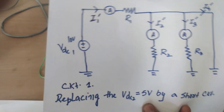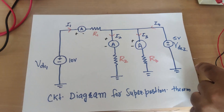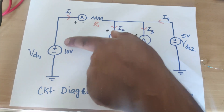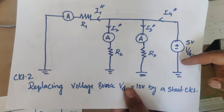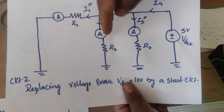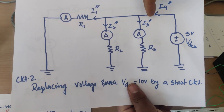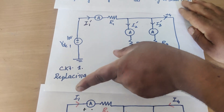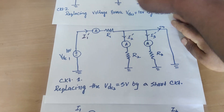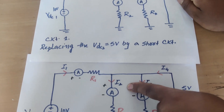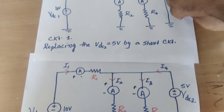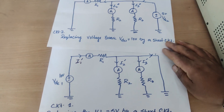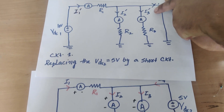Then we activate the 5-volt source and replace the other source by a short circuit (its internal impedance). The currents in this case are i1-double-dash, i2-double-dash, and i3-double-dash. To verify the Superposition Theorem, i1 must equal the algebraic sum of i1-dash and i1-double-dash; similarly i2 equals the sum of i2-dash and i2-double-dash, and i3 equals the sum of i3-dash and i3-double-dash.